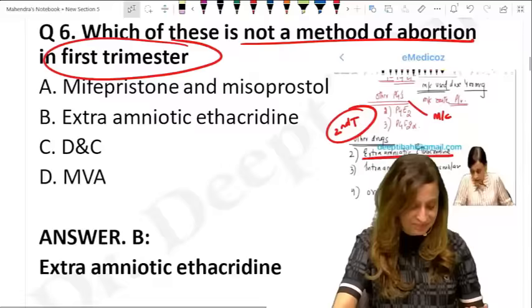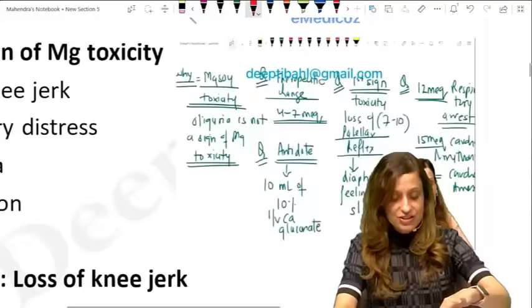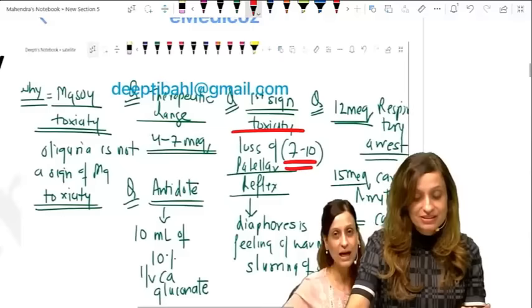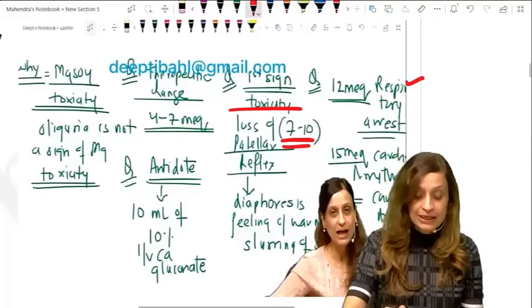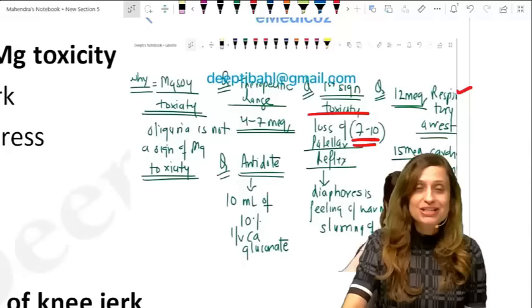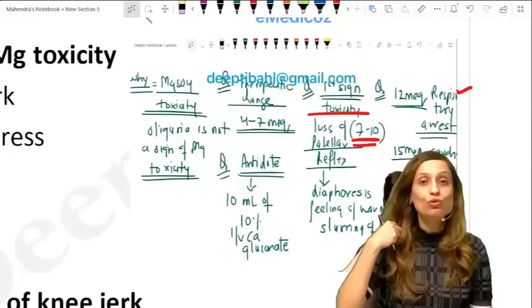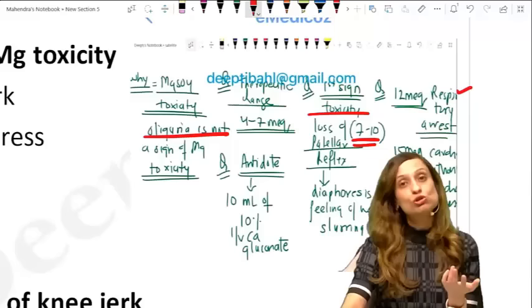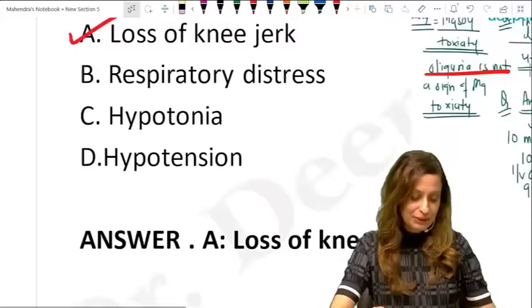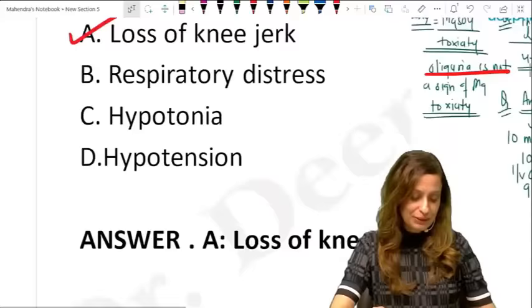First sign of magnesium toxicity is loss of knee jerk or patellar reflex, occurring at 7–10 milliequivalents. At 12 milliequivalents there is respiratory arrest; at 15, cardiac arrhythmias and conduction defects; at 20–25, cardiac arrest. The antidote is 10 ml of 10% calcium gluconate. Remember: oliguria is not a sign of magnesium toxicity — it can cause toxicity but is not a sign. Mag sulph is not an antihypertensive drug.